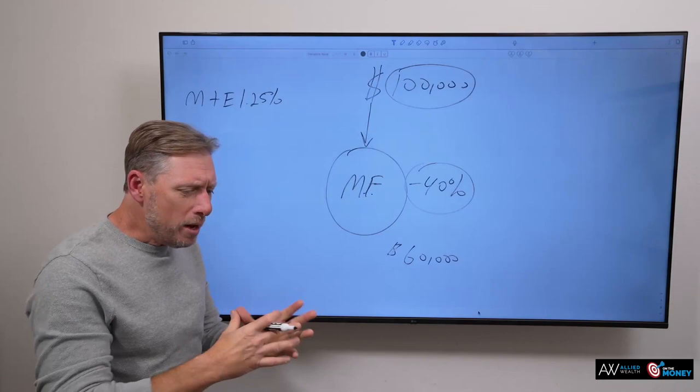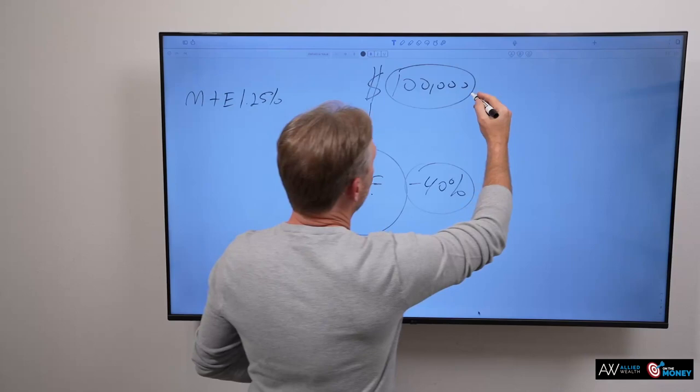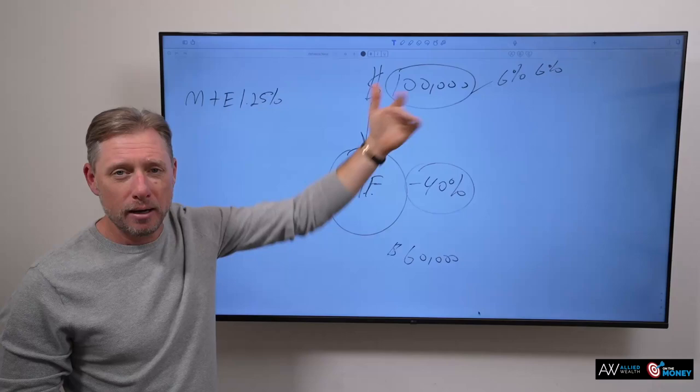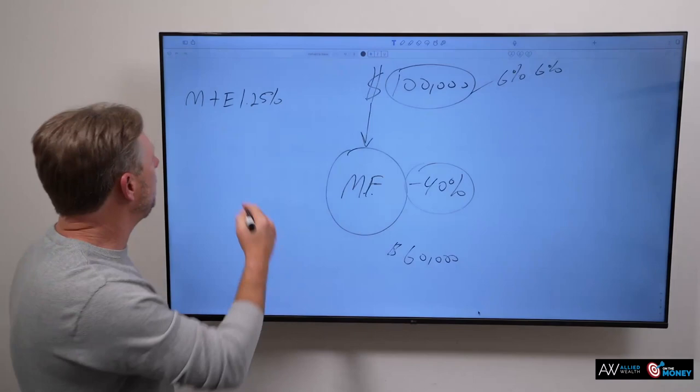Next thing. You see this death benefit? We can add on a death benefit rider that says our death benefit is guaranteed to grow by some percentage, maybe 6% each year. So the worst case scenario from a death standpoint is that my beneficiary's death benefit is growing at some guaranteed rate. And that's called a death benefit enhancement rider.